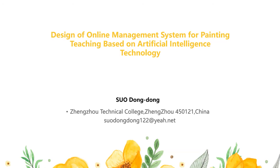Design of Online Management System for Painting Teaching Based on Artificial Intelligence Technology. Abstract: In order to better improve the quality of teaching, the design of an online management system for painting teaching based on artificial intelligence technology is proposed. The hardware structure configuration of the teaching management system is optimized and perfected, and the system software operation process is optimized to improve the system management function, ensure the effect of system operation, and improve the quality of painting teaching.